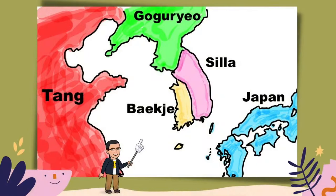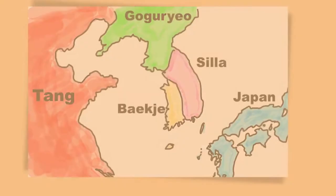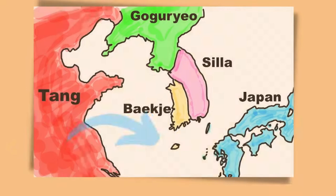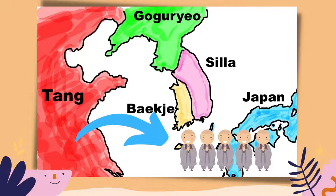In 618, the Tang Dynasty unified China and created a powerful empire. On the Korean Peninsula, there were three countries: Kogiro, Silla, and Beguche. When the Tang Dynasty began to attack Kogiro, the situation in East Asia became tense. The Yamato government received information about the international situation from students and monks who returned from China and decided to reform its domestic politics and to create a strong centralized state.